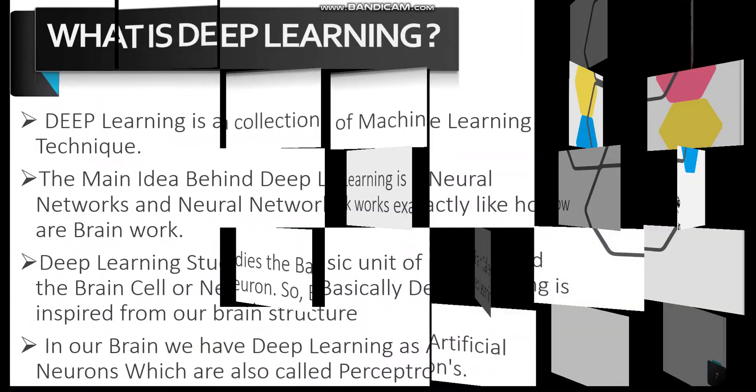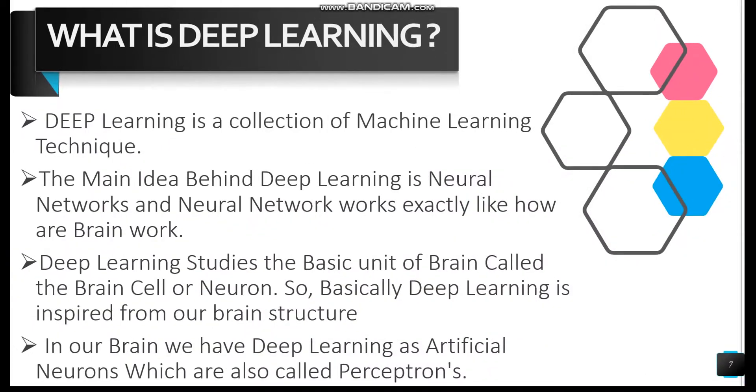Now let me help you understand what exactly Deep Learning is. Deep Learning is a collection of Machine Learning techniques. The main idea behind Deep Learning is Neural Networks and Neural Networks work exactly like how the brain works. Deep Learning studies the basic unit of the brain called the brain cells or neurons. So basically Deep Learning is inspired from our brain structures.